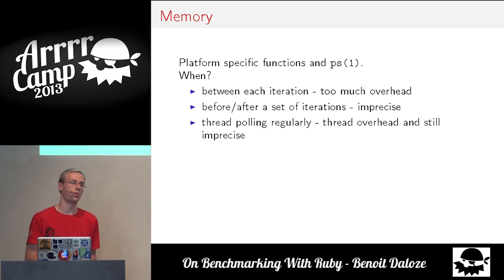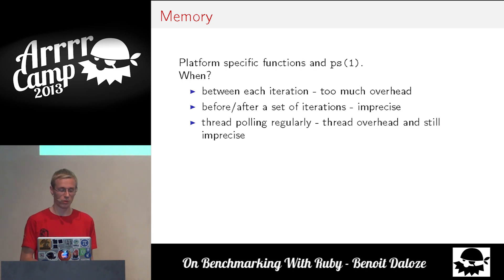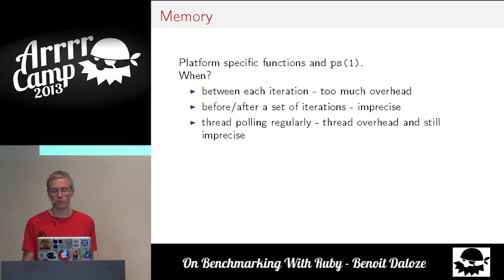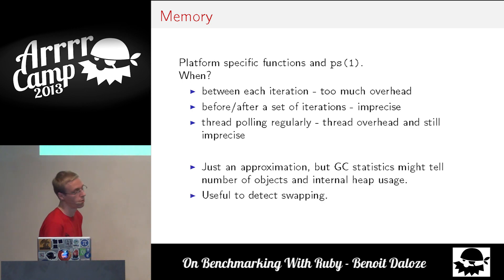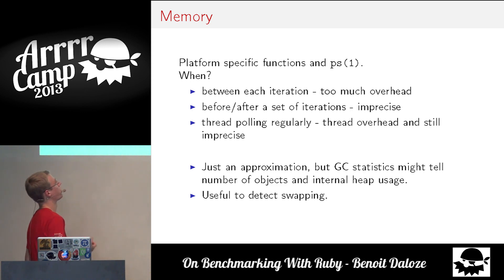For memory, there are many ways to measure it, but the only portable way is using ps and its Windows equivalent — and it's not an easy problem. It's much harder than time. We can't measure between each iteration because iterations are very fast and it would introduce a lot of overhead. We could measure before and after a set of iterations, or have a thread polling for memory usage. A good current approach is to use GC statistics, which are internal to each implementation and provide much more than just global memory. It's also useful to detect swapping: if you don't have enough free memory, it's a problem to run a benchmark.